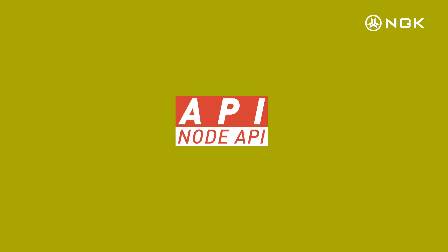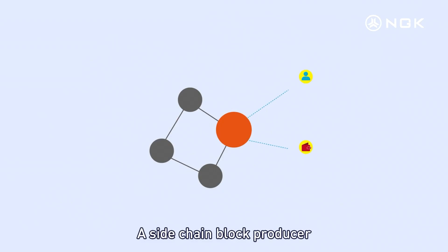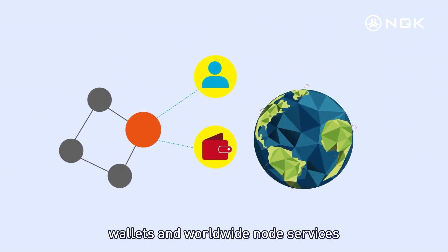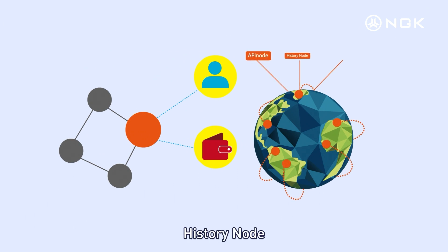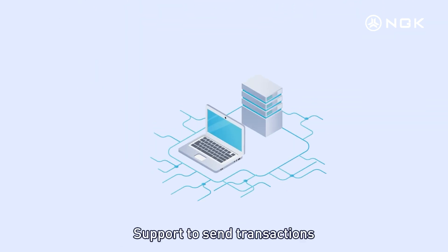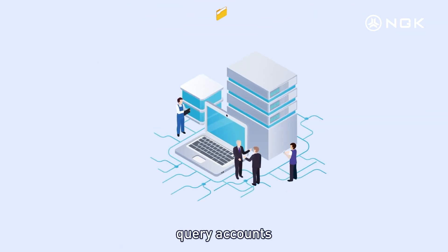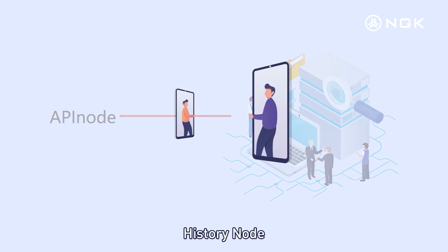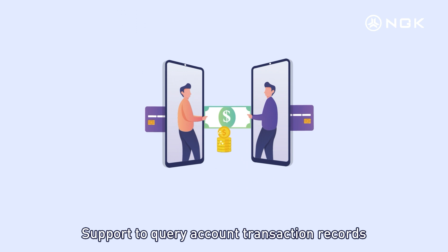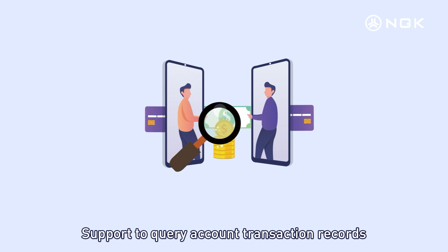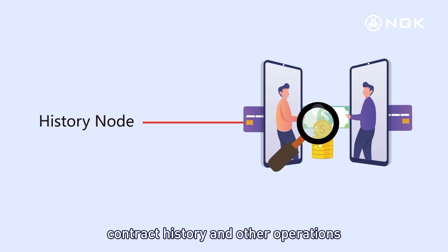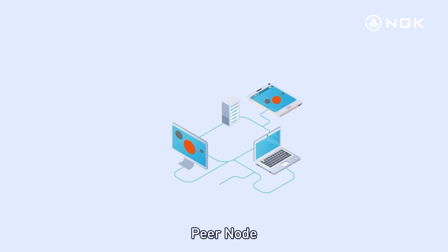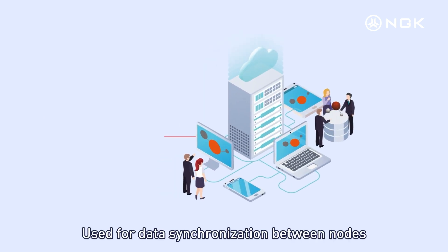API Node. A sidechain block producer will provide developers, wallets, and worldwide node services including API Node, History Node, and Peer Node. API Node supports sending transactions, querying accounts, querying contract databases, and other operations. History Node supports querying account transaction records, contract history, and other operations. Peer Node is used for data synchronization between nodes.